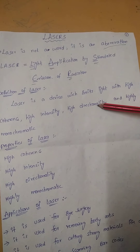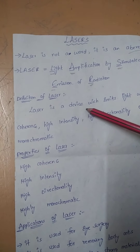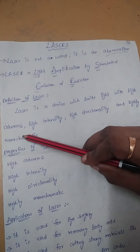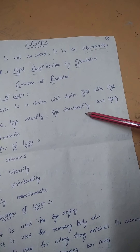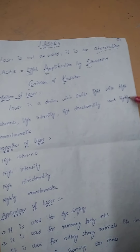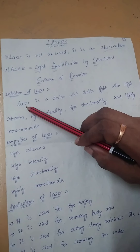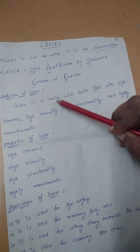I will show you the definition of laser. Laser is a device which emits light with high coherence, high intensity, high directionality, and highly monochromatic.